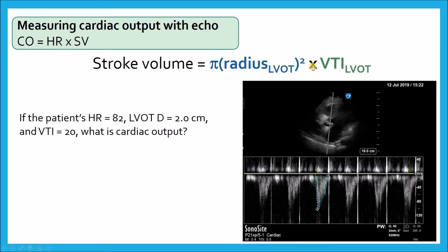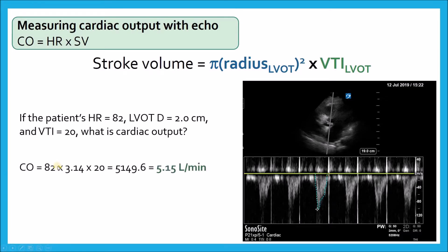Here's an example. I had a patient where we already measured the LVOT diameter was 2.0 centimeters. The patient's heart rate was 82. I traced the LVOT VTI — you might want to measure several and average them — and let's say the VTI measures out at 20. Cardiac output equals heart rate times stroke volume: 82 times pi r squared (which is 3.14, since radius is 1) times 20 (the VTI), giving 5,149 milliliters per minute. Divide by 1,000 and you get your cardiac output. Pretty easy.